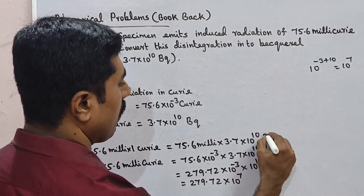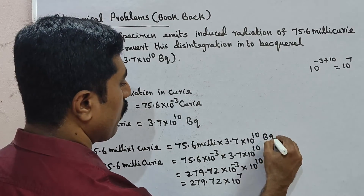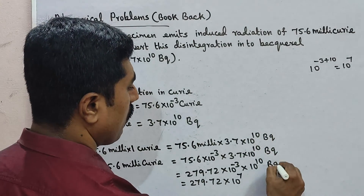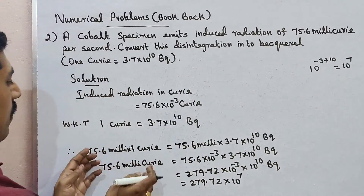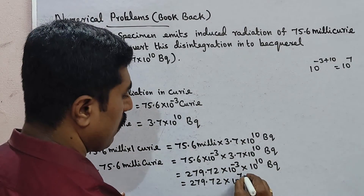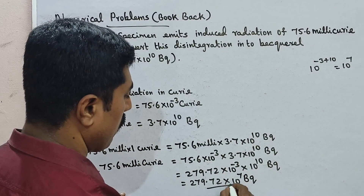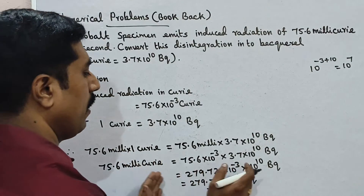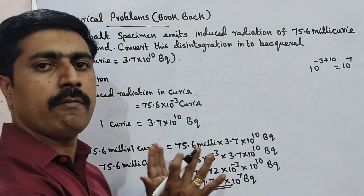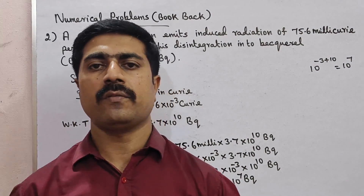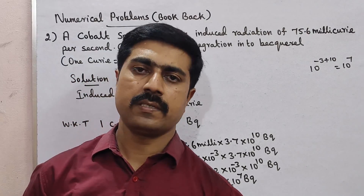The answer is 279.72 into 10 power 7 becquerel. Correct? So the right side gives becquerel. All the best. Thank you.